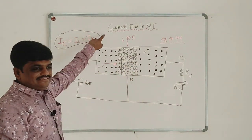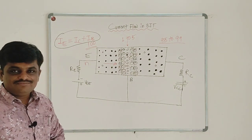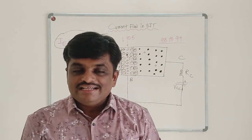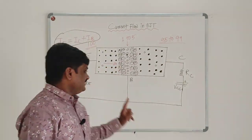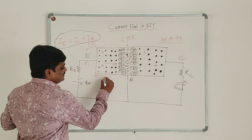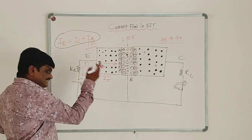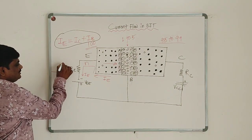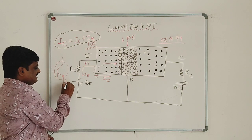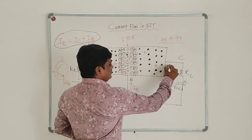The emitter current is the highest current, the base current is the smallest current, and the collector current is nearly equal to the emitter current but somewhat less. We know that conventional current always flows in the opposite direction to electron flow. Since electrons flow towards the right side, the conventional emitter current flows in the opposite direction, that is towards the left side. This is why in the symbol of an NPN transistor, we show an outward arrow, indicating that the emitter current flows out of the emitter terminal.